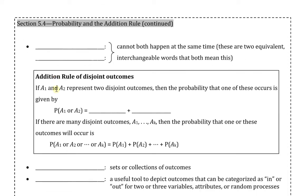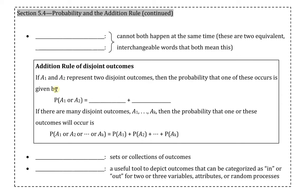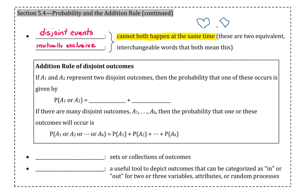Let's continue to look at probability. We would like to look at disjoint events, sometimes also called mutually exclusive events. These are events that cannot both happen at the same time. For example, if you're flipping a coin, either you'll land on a head or a tail, but you can't land on both at the same time. Or consider a deck of cards — you'd pull out a heart or a diamond, but these are disjoint events because a card cannot be both a heart and a diamond at the same time.